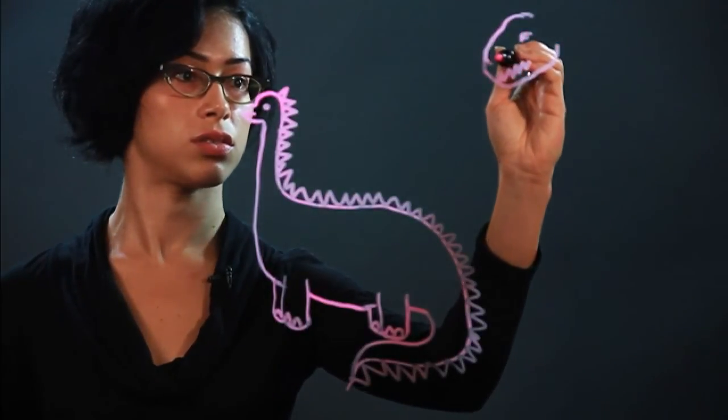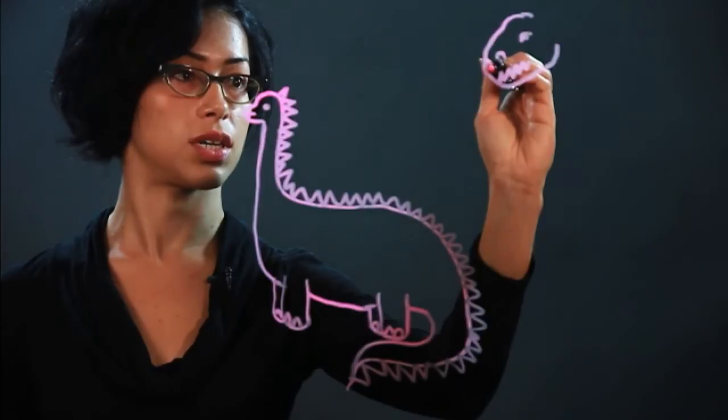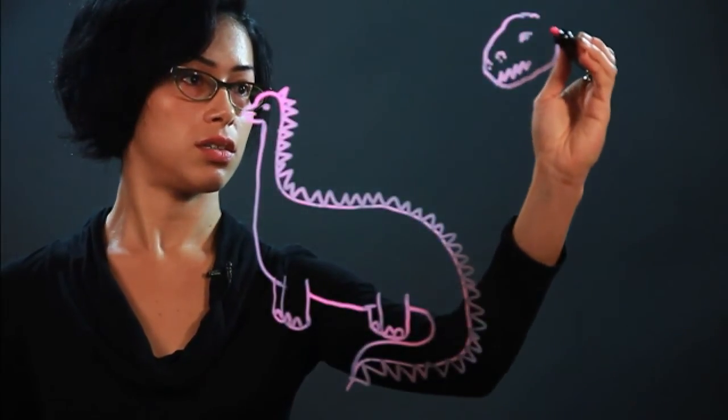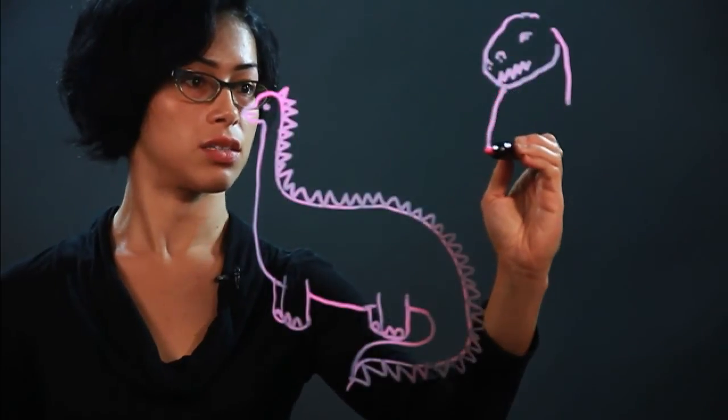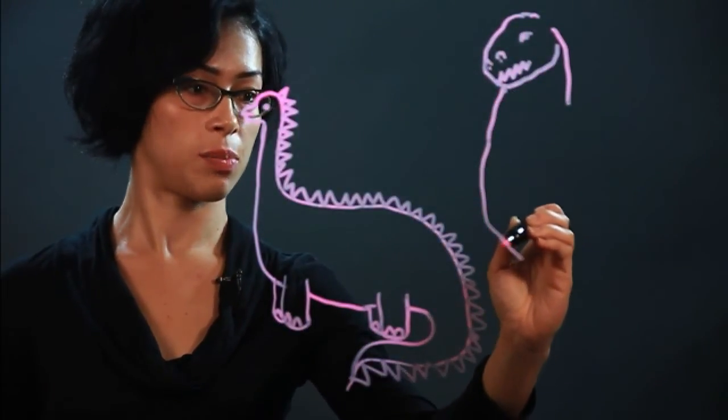Let's do some nostrils. Half circles with dots in them. And this is the body. It's got a big belly. Stands upright.